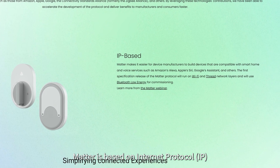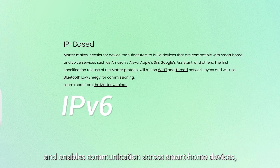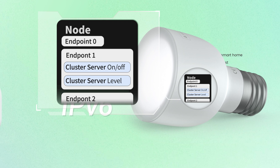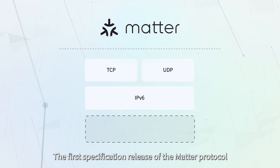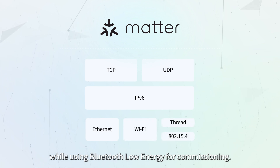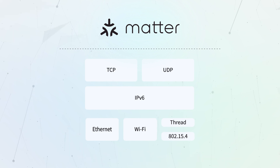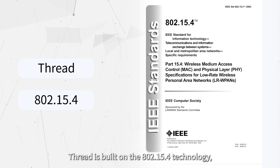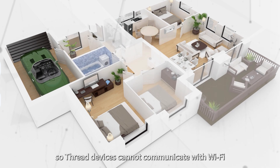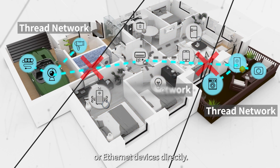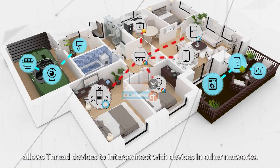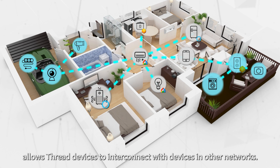Matter is based on Internet Protocol and enables communication across smart home devices, regardless of their manufacturer. The first specification release of Matter Protocol will run on Wi-Fi and Thread network layers, while using Bluetooth Low Energy for commissioning. Thread is built with 802.15.4 technology, so Thread devices cannot communicate with Wi-Fi or Ethernet devices directly. Adding a Thread border router to a Matter topology allows Thread devices to interconnect with devices in other networks.